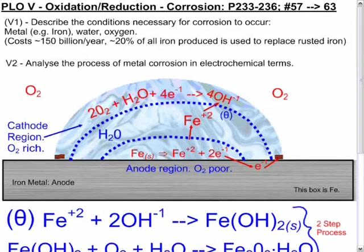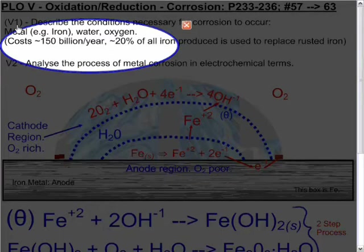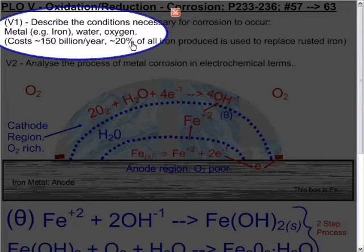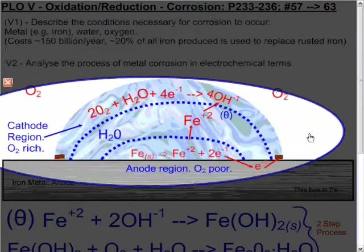In order for corrosion to occur, you need metal, for example iron, water, and oxygen. Now we are going to look at first at the actual reaction, and the actual reaction is here.